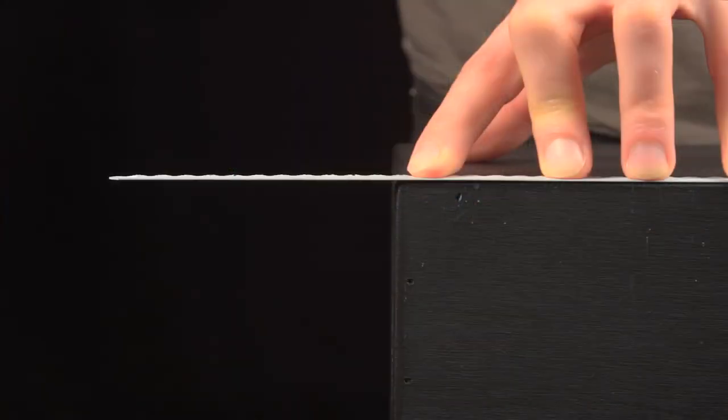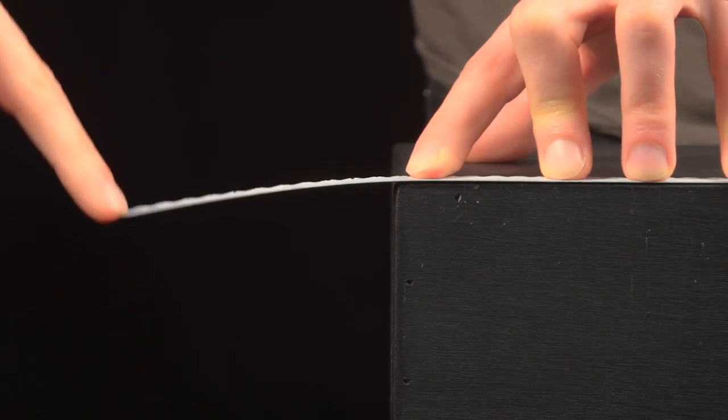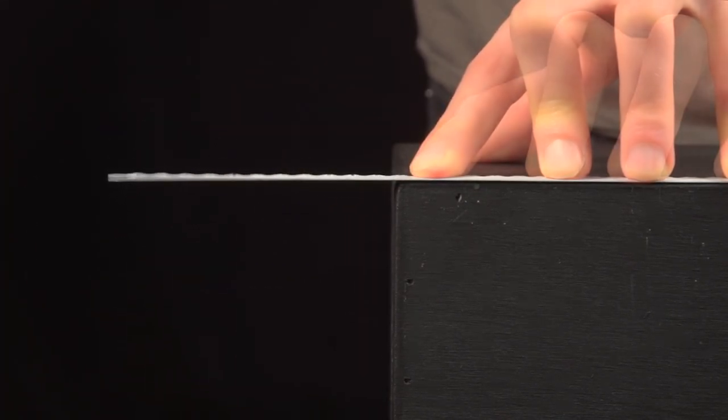The teeth are like this saw blade. When it's longer, it produces a lower note when plucked, and when shorter, it produces a higher note.